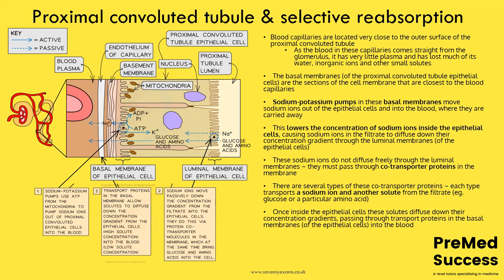The sodium-potassium pump actively transports sodium into the blood — this is active transport requiring energy. That creates a concentration gradient inside the cell, so sodium passively diffuses in from the proximal tubule lumen. The pump is what sets up that gradient and drives everything from the lumen back into the blood.